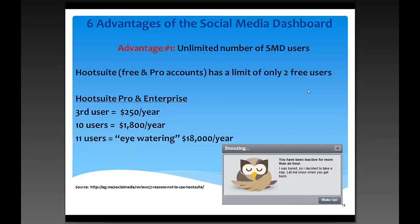The number one advantage is that the dashboard allows an unlimited number of users. Everybody in the office can be on the dashboard — there's no login or password, you just click the link and it launches. With HootSuite's free version, you're limited to just two users; a third user bumps off the first. We looked into buying more licenses, but adding a third user was $250 a year, and getting up to 11 users would cost $18,000 a year. That's a lot of money just to monitor Twitter.